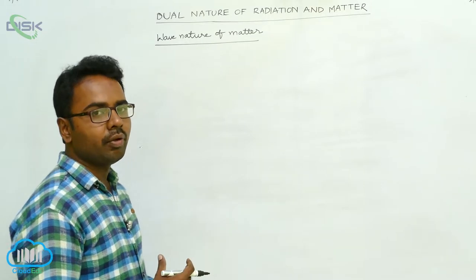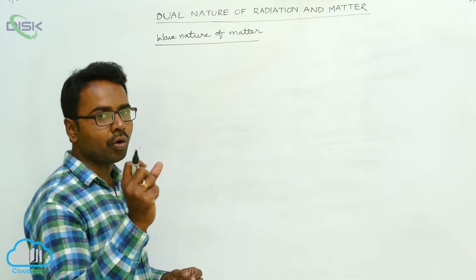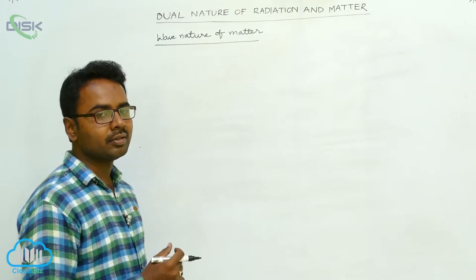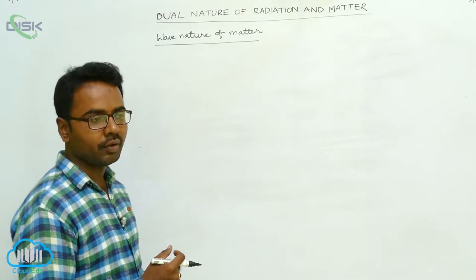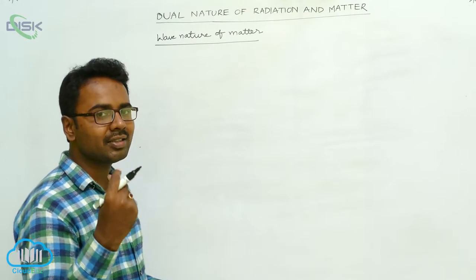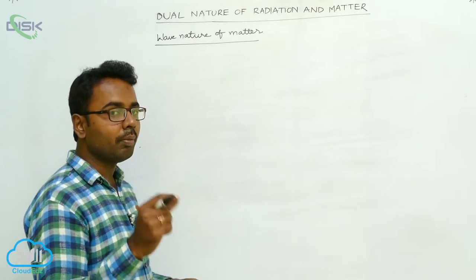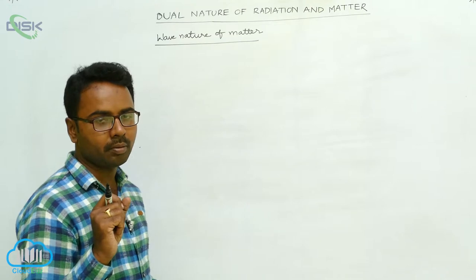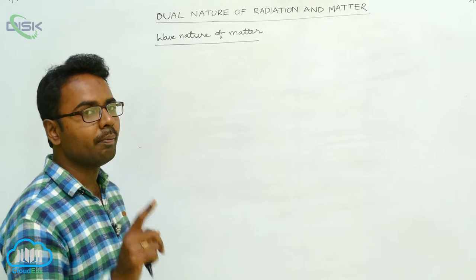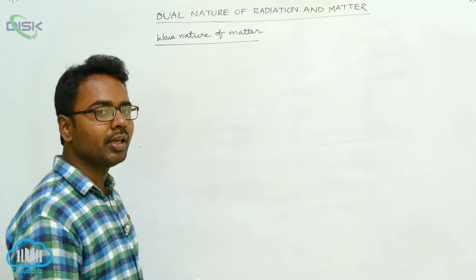In our daily life, whenever we are watching an object, the lens gathers and focuses the light, and during this the light behaves as a wave. But whenever the light is absorbed by the rods and cones on the retina of the eye, it means light behaves as if it is made up of particles.